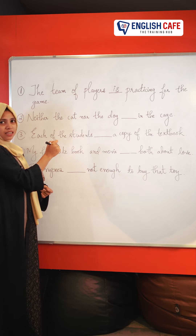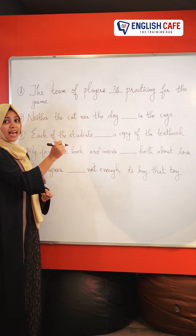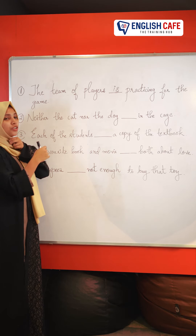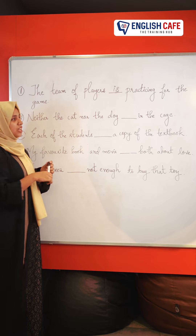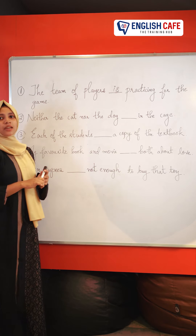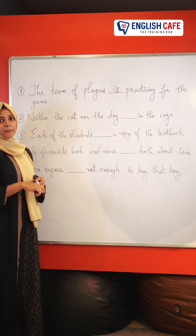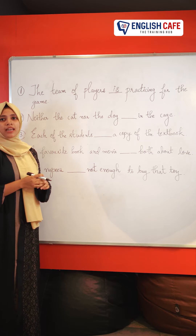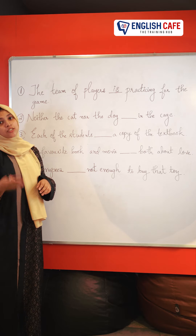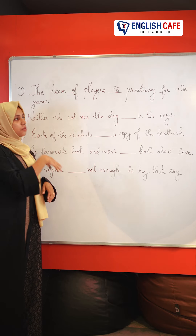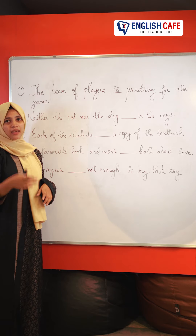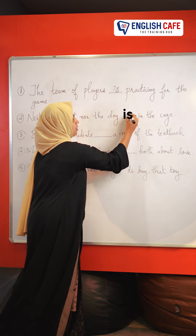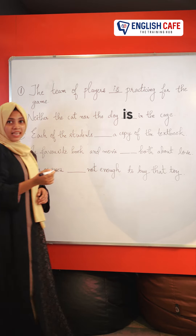Next one: Neither the cat nor the dog dash in the cage. Now, what auxiliary verb is used? With 'neither...nor', the subject closest to the verb determines agreement. The answer here is 'is', because the subject 'dog' is singular.